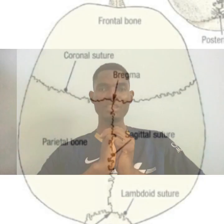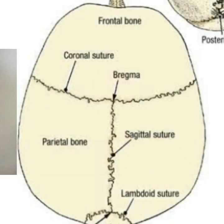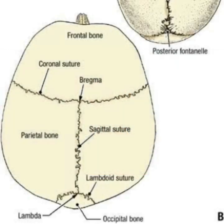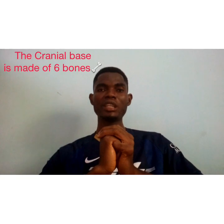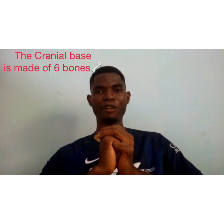Let's talk about the cranial roof. The cranial roof is also known as the calvaria. It is made up of the frontal bone, the two parietal bones, and the occipital bone. They are joined together through sutures, and a suture is a fibrous joint that is very unique to the skull.